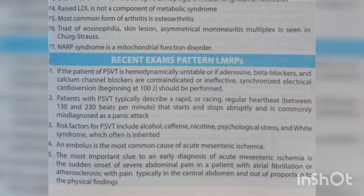If a patient with PSVT is hemodynamically unstable, or if adenosine, beta blockers, and calcium channel blockers are contraindicated or ineffective, synchronized electrical cardioversion should be performed. Patients with PSVT typically describe a rapid or racing regular heartbeat between 130 and 230 beats per minute that starts and stops abruptly, and is commonly misdiagnosed as a panic attack. Risk factors for PSVT include alcohol, caffeine, nicotine, psychological stress, and Wolff-Parkinson-White syndrome, which is often inherited.